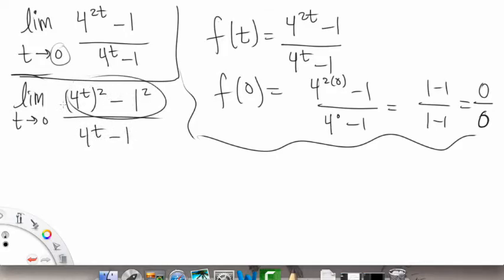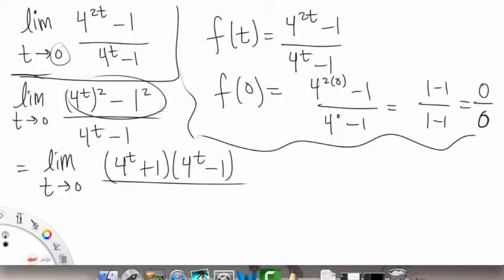So what we have on the top is actually a difference of two squares. So this could equal, if we break it up, if we factor it, then we could have 4 to the t plus 1 as well as 4 to the t minus 1, okay? So that's the same thing that we see here that turns into that. Then on the bottom we have our 4 to the t minus 1.